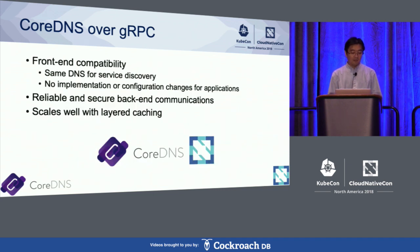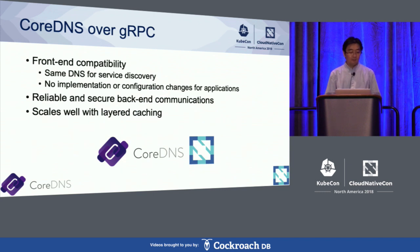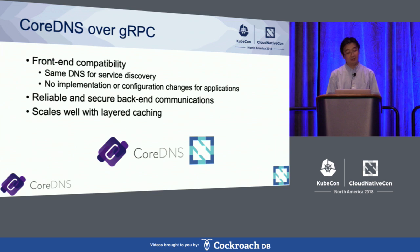The end result has been really satisfying for us. We achieved frontend compatibility because we are using the same DNS for service discovery. There is no implementation or configuration change for deployed applications. And for backend communications, it's much more reliable and much more secure now. Also, our infrastructure scales really well because we use layered caching.